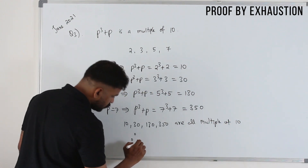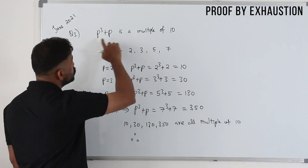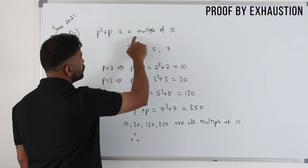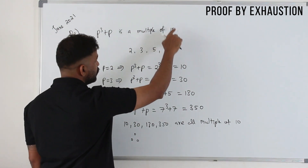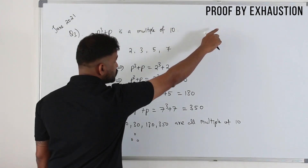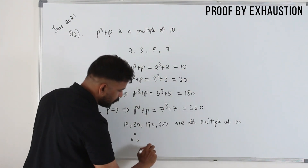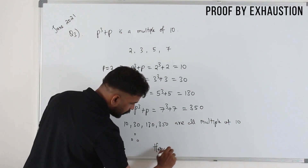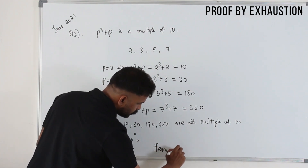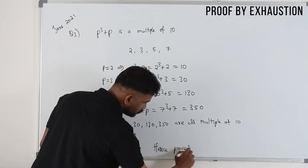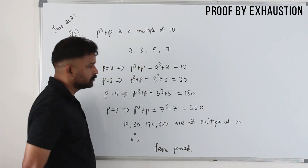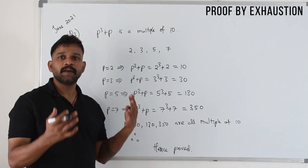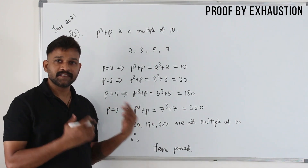Therefore, p³ + p is a multiple of 10 for all single-digit prime numbers. Hence proved. That's how you apply proof by exhaustion.